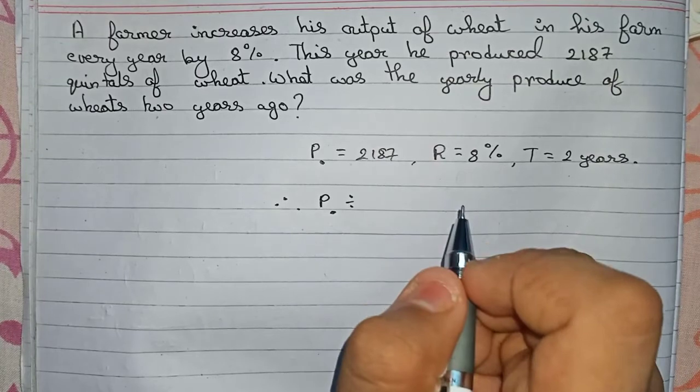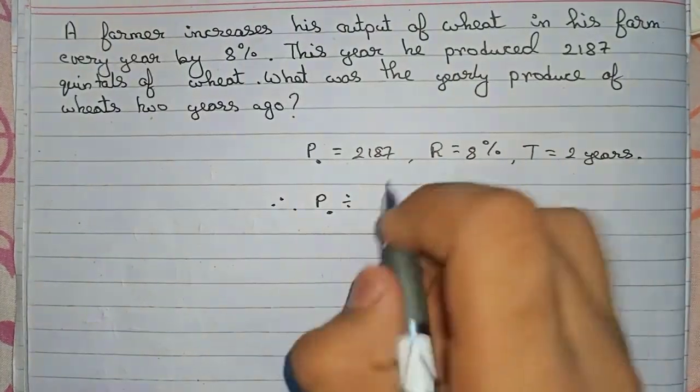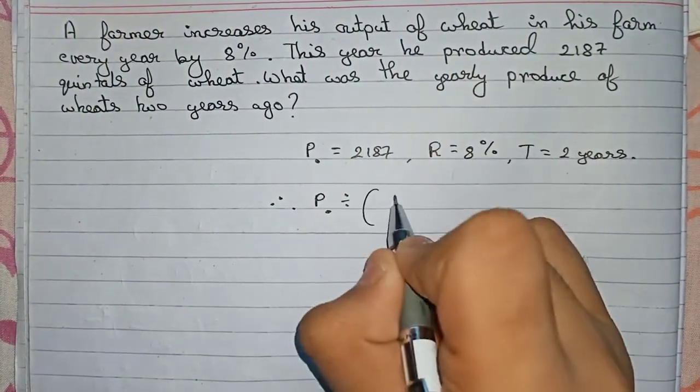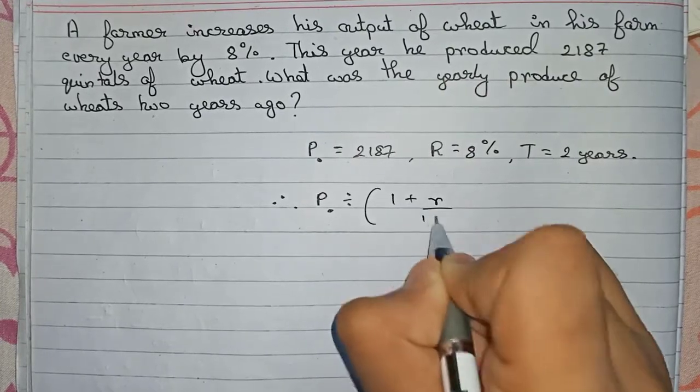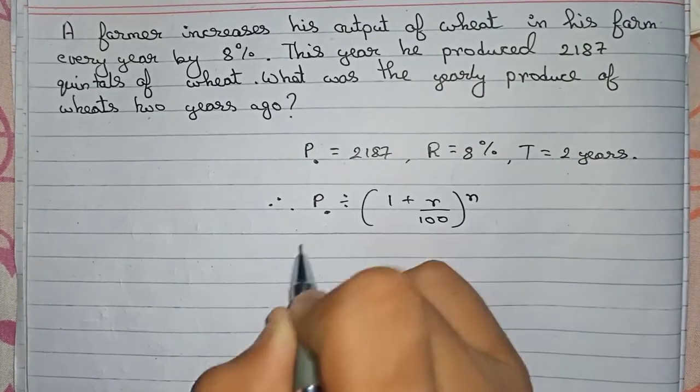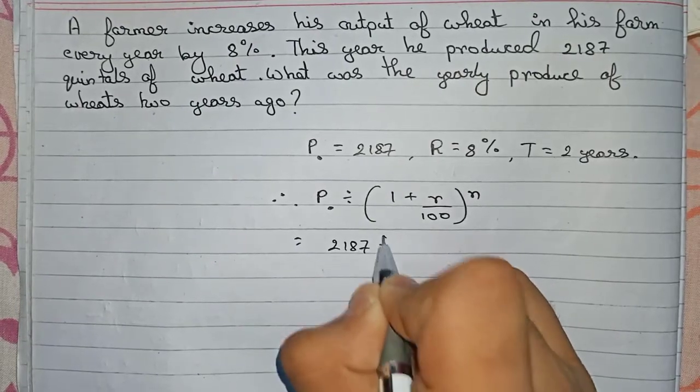That is (1 + r/100)ⁿ. So put down the values: 2187 divided by (1 + 8/100)².